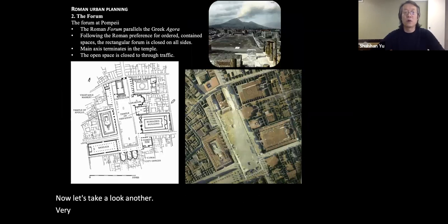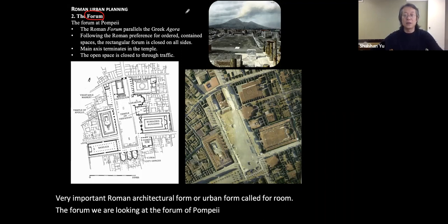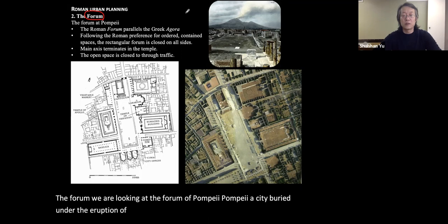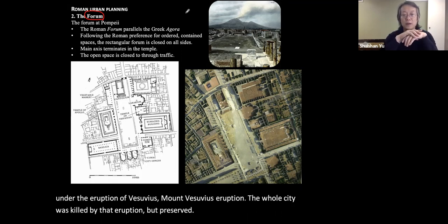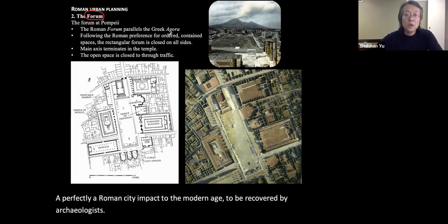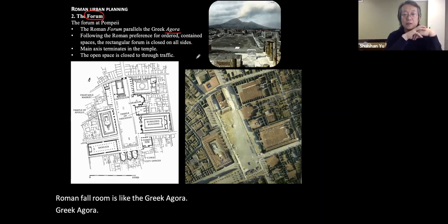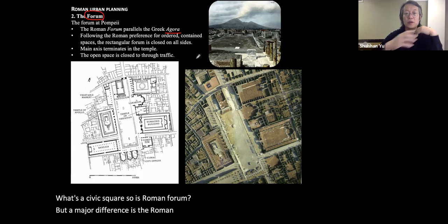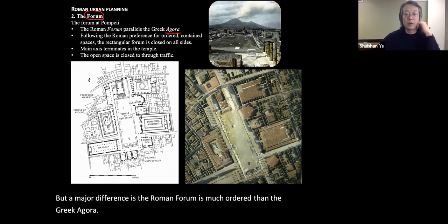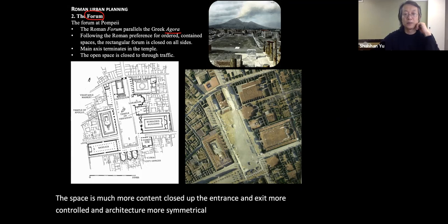Now let's look at another very important Roman architectural form — the forum. We are looking at the forum of Pompeii, a city buried under the eruption of Mount Vesuvius. The eruption killed the whole city but preserved a perfectly intact Roman city to the modern age, recovered by archaeologists. The Roman forum is like the Greek agora — a civic square — but a major difference is that the Roman forum is much more ordered than the Greek agora. The space is more contained and closed, the entrances and exits are more controlled, and the architecture is more symmetrical and axial.